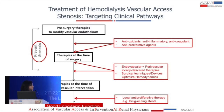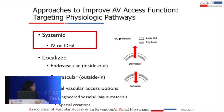Putting it all together: we have our clinical pathway and our interventions. Before surgery, we can have agents that act locally with antioxidants, anti-inflammatories, anticoagulants, or antiproliferants — either before or at the time of surgery, either locally or systemically. At the time of surgery or after surgery, we can have endovascular or perivascular locally delivered therapies, or the surgeon can deliver surgical techniques or devices to optimize hemodynamics. And if stenosis occurs, we have therapies at the time of intervention, such as local antiproliferative therapies using drug-eluting stents.